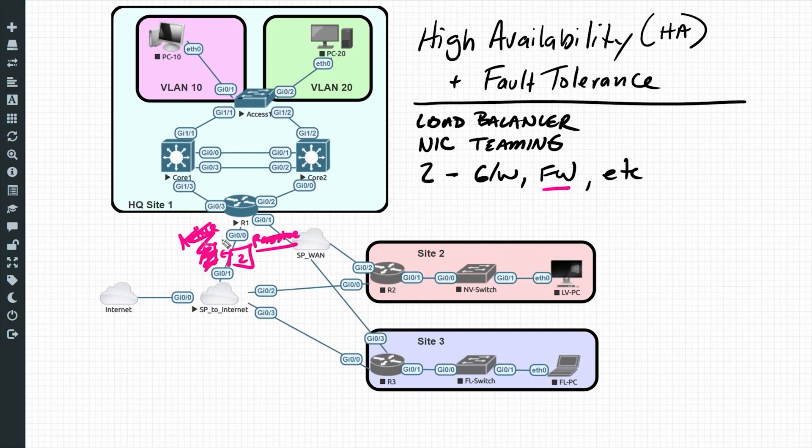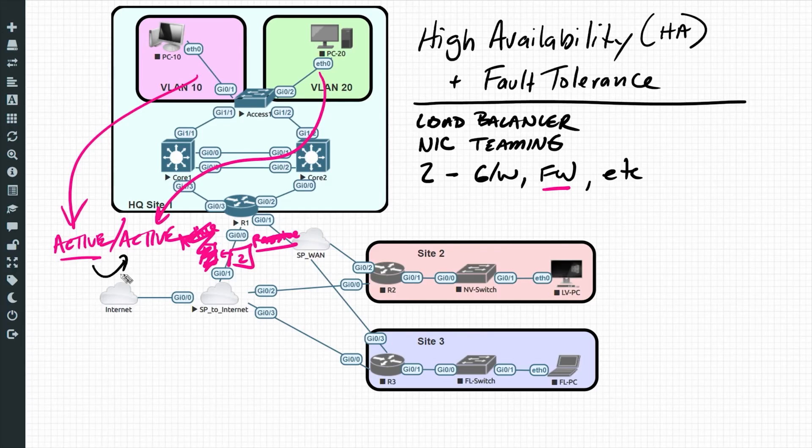Another option besides doing active-passive is called active-active. And with active-active, one of the firewalls takes a portion of the traffic, and the other firewall takes another section of traffic, maybe from VLAN 20. But at the same time, they're paying attention to each other. If the other one fails, the one that remains will take over the responsibility for all the traffic. So whether it's active-active or active-passive, the idea is that we have two devices, two firewalls in this example, that are providing that fault tolerance.